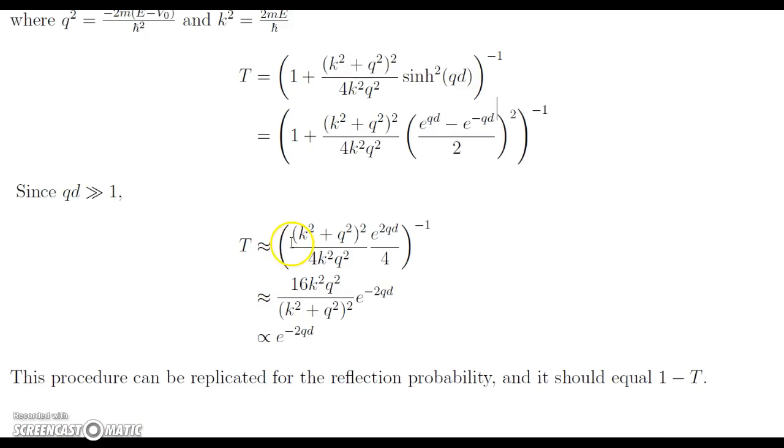So then we have T is approximately equal to this. You're going to ask where the 1 is, and that's going to come in next. Since this value is going to be very large, since q times d is very large, this value overall is going to be very large in comparison to 1.